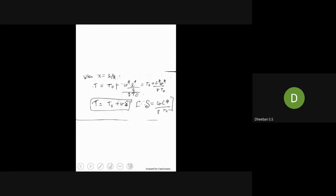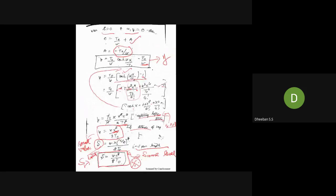Next is the calculation of tension. The horizontal tension T₀ is taken. At any point, tension has two components: Tx = T₀ (horizontal) and Ty = Ws (vertical, equal to the weight). The final tension is T = T₀ + W·s, using the same s value calculated previously.